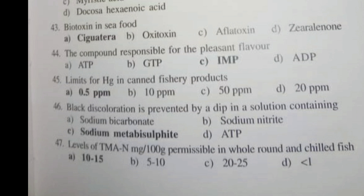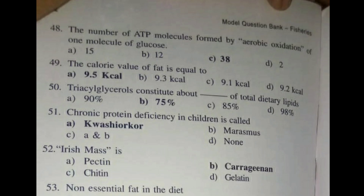Question 46 - Black discoloration is prevented by a dip in a solution containing. The answer is C, Sodium metabisulfite. Question 47 - Levels of TMA in mg per 100 grams permissible in whole round and chilled fish. The answer is 10 to 15.